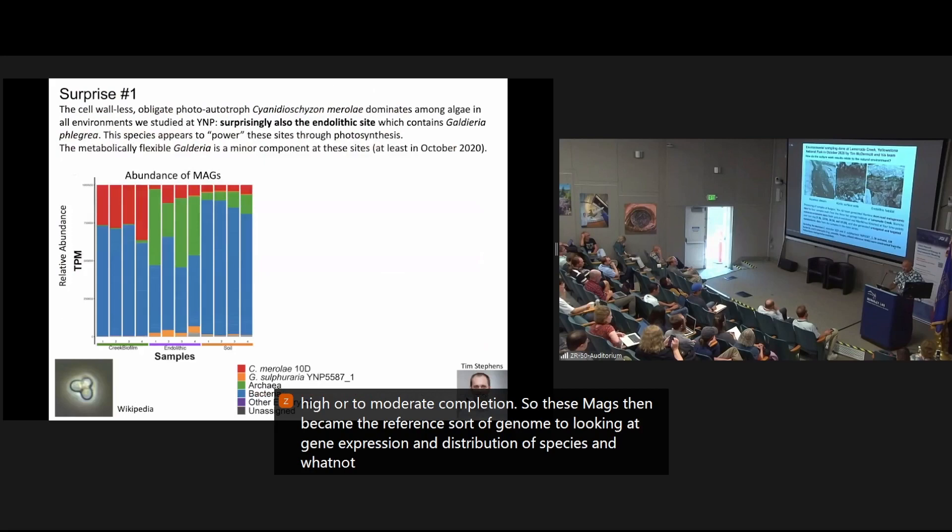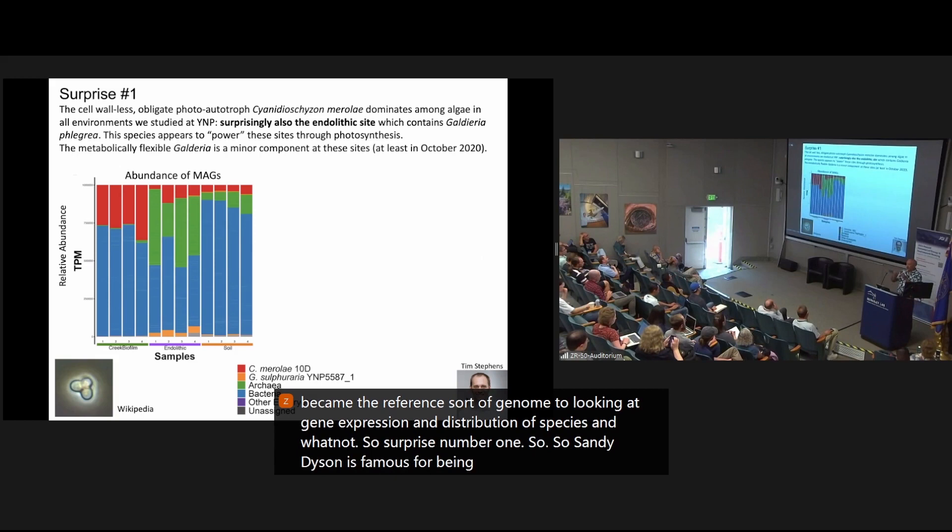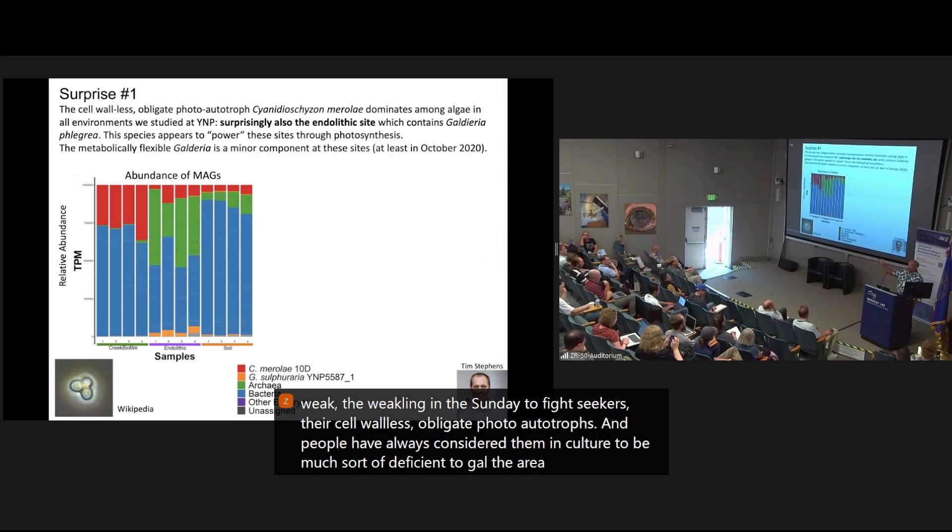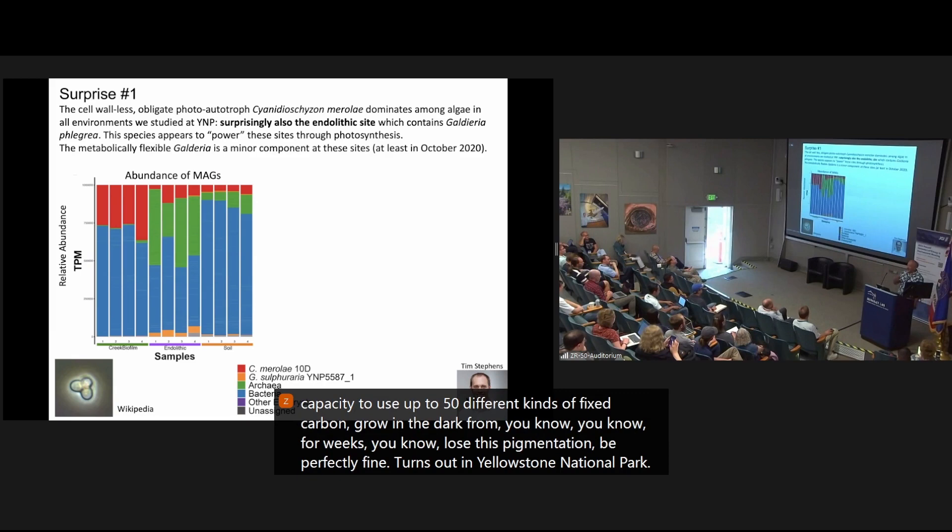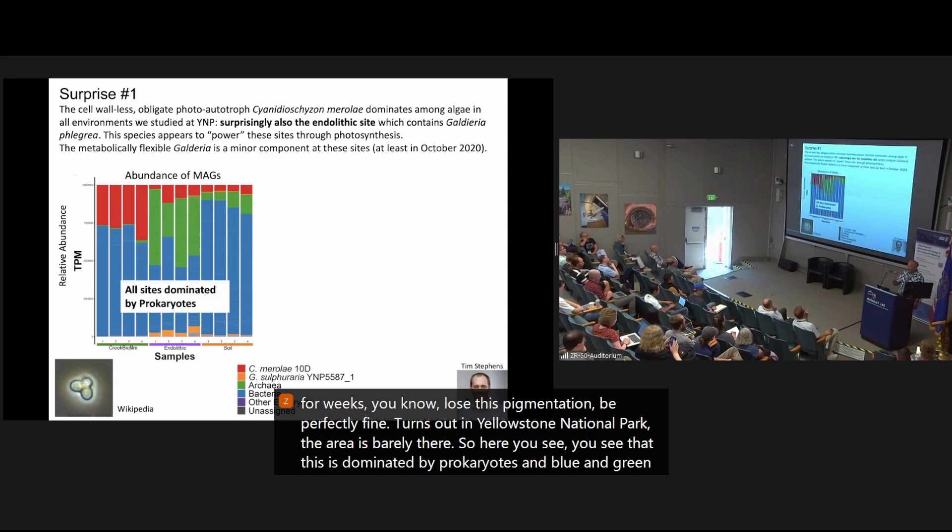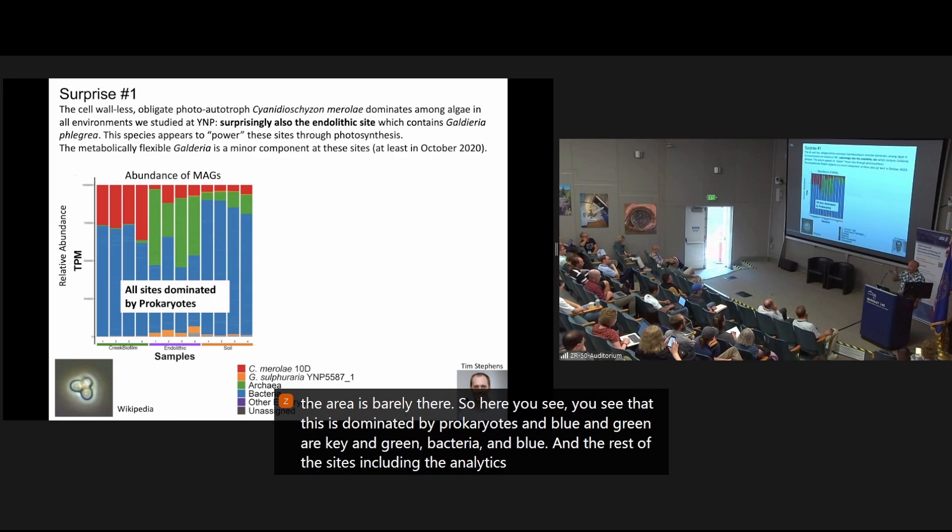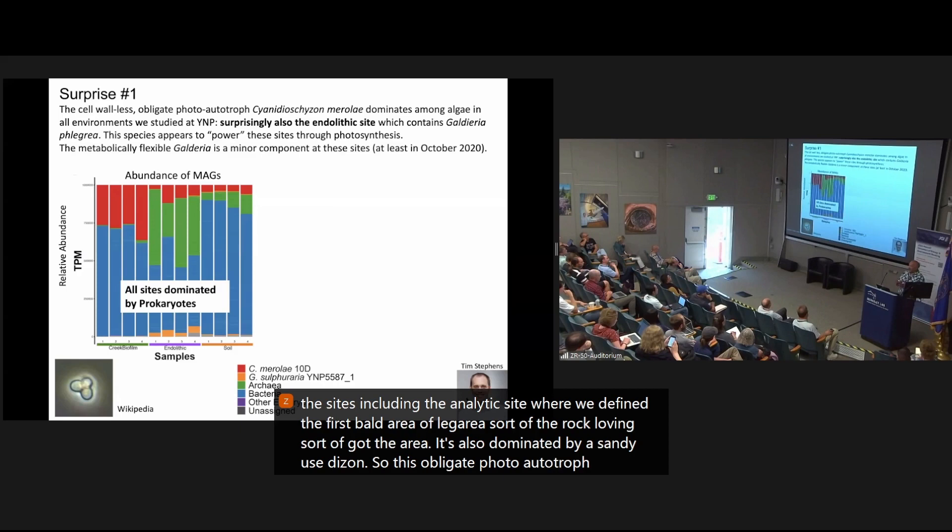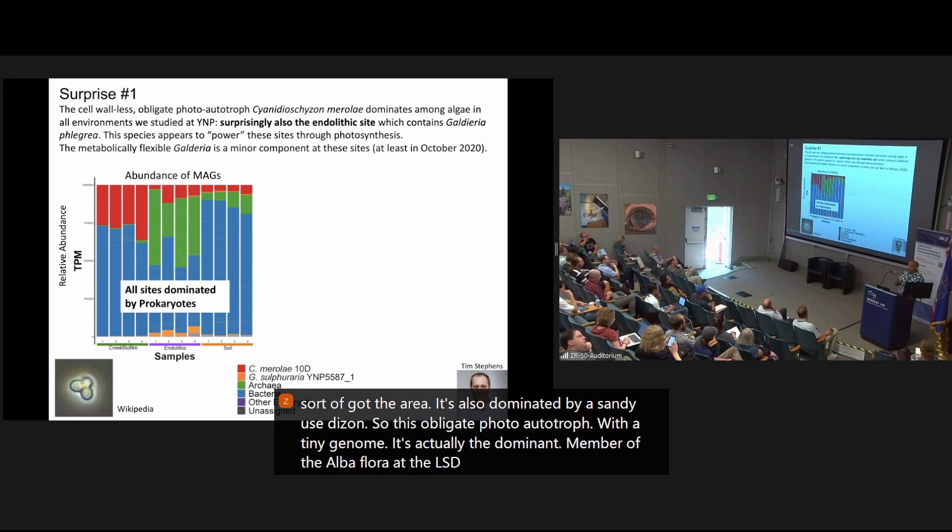So surprise number one, so cyanidioschizon is famous for being the weakling in the cyanidioficea because they're cell wall-less, obligate photoautotrophs and people have always considered them in culture to be much deficient to galdieria, which has the capacity to use up to 50 different kinds of fixed carbon, grow in the dark for weeks, loses pigmentation, do perfectly fine. Turns out in Yellowstone National Park, galdieria area, it's barely there. So here you'll see, you'll see that this is dominated by prokaryotes in blue and green, archaea and green, bacteria and blue, and the rest of the sites, including the endolithic site where we defined the first galdieria phlegrea, the rock-loving galdieria, it's also dominated by cyanidioschizon. So this obligate photoautotroph with a tiny genome is actually the dominant member of the algal flora at Yellowstone National Park at these three sites at least in October 2020.